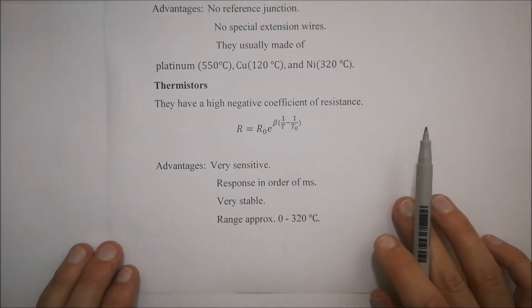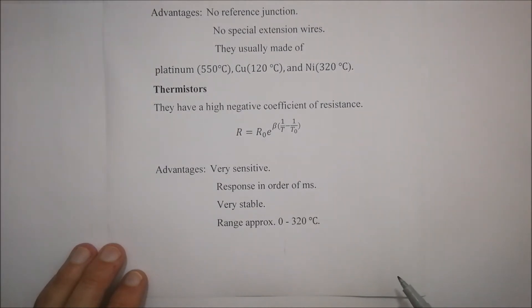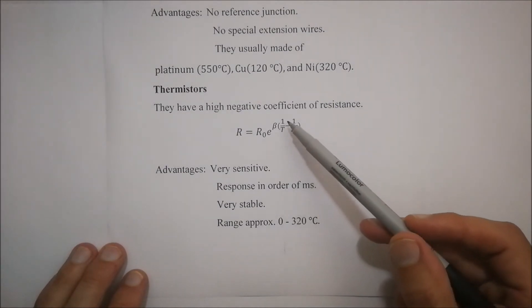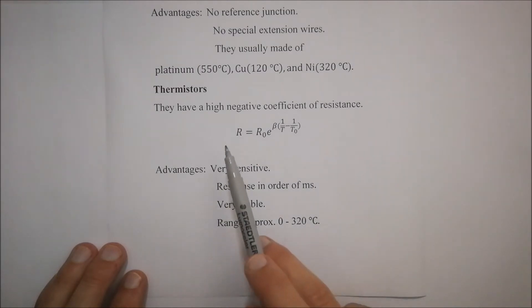Then we've got thermistors. They have a high negative coefficient of resistance. You'll actually see that the temperature over there is inverted in this exponential equation. So the resistance equal to the resistance at zero degrees Celsius, multiplied by e to the power of beta, multiplied by one over T minus one over the temperature at zero.